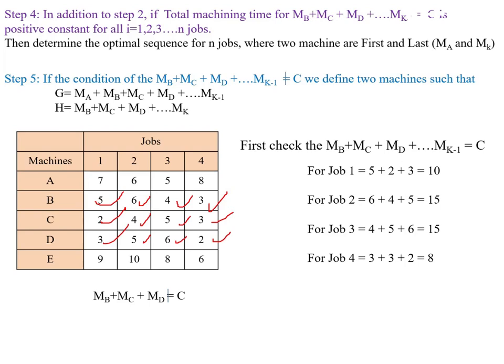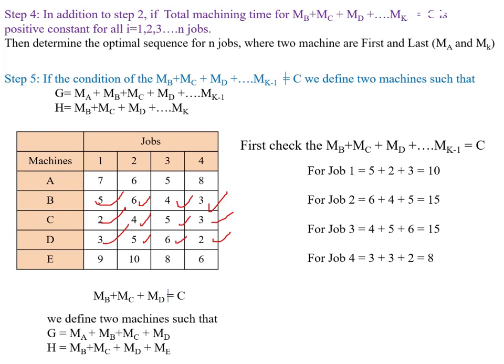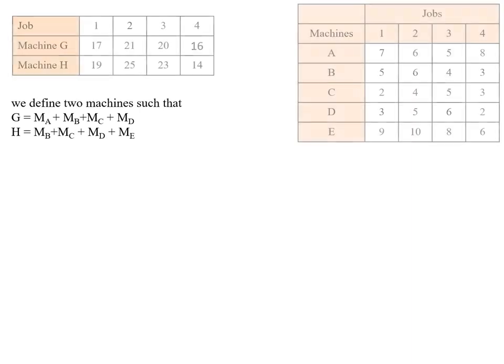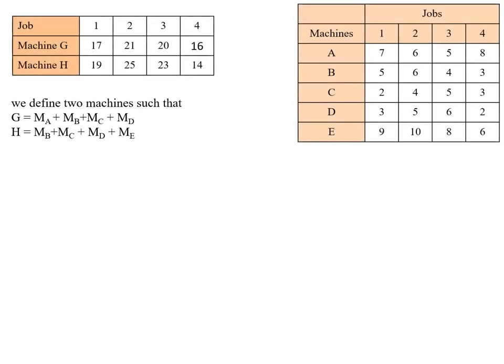So step 5 is applicable and we define two new machines G and H, where G = M_A + M_B + M_C + M_D, and H = M_B + M_C + M_D + M_E. Next, we compute the values for machines G and H.